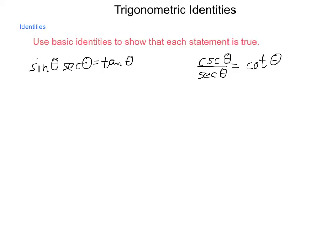The reason I included 'where the domain exists' is because in tangent, cotangent, secant, and cosecant, there are asymptotes present. So as long as the domain of the functions we're using exists, these identities will hold true. We already know several trig identities, such as the reciprocal functions.